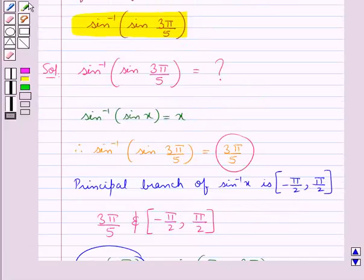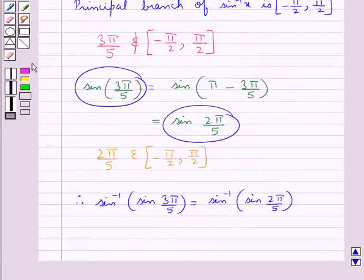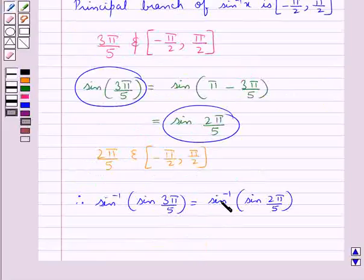And we already know that sine inverse of sine x is equal to x, so here sine inverse of sine 2 pi by 5 is equal to 2 pi by 5.